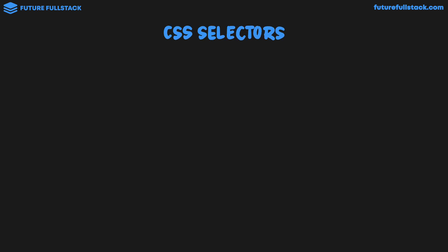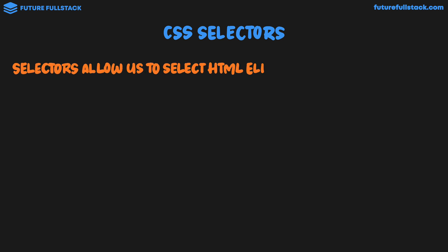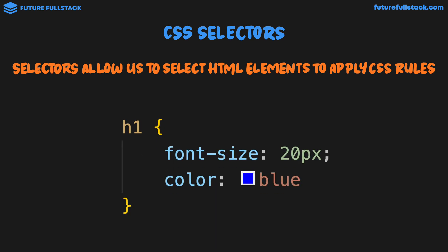So let's start off by taking a broad look at CSS Selectors. As we know by now, selectors allow us to select HTML elements to apply CSS rules. For example, on this H1, we're applying a font size and color. The H1 is the selector. This is the only type of selector we've seen so far in this course.